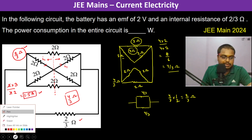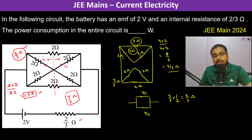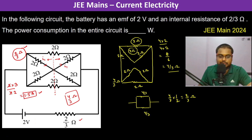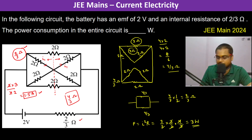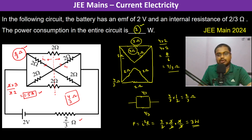The power consumption in the entire circuit: P = I²R = (3/2)² × (4/3) = (9/4) × (4/3) = 3 watts. So the answer is 3 watt.